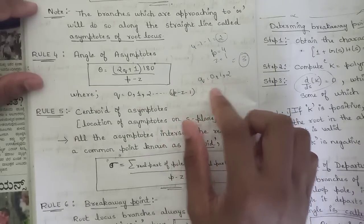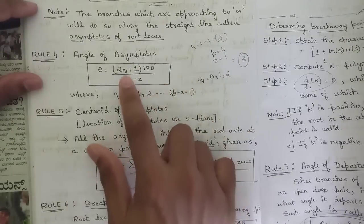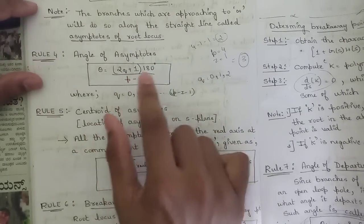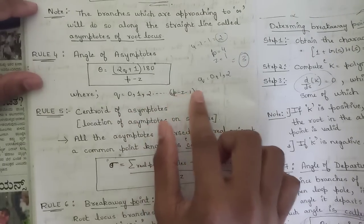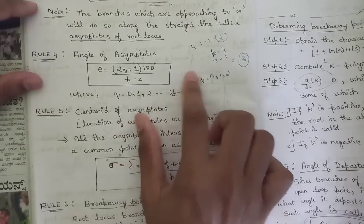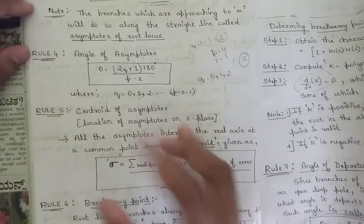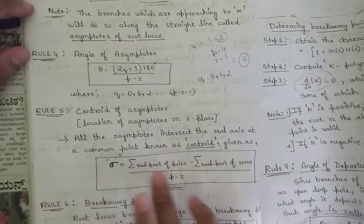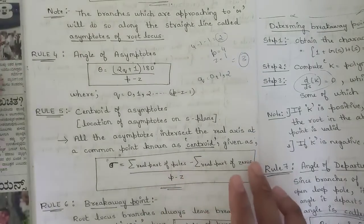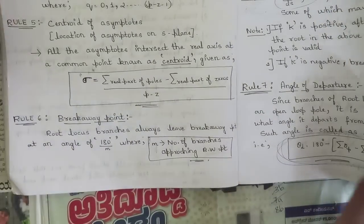For example, if there are four poles and one zero, the total values of q give the angles of asymptotes accordingly. The centroid sigma is calculated as: summation of real parts of poles minus summation of real parts of zeros, divided by P minus Z. After that, we determine the breakaway point.